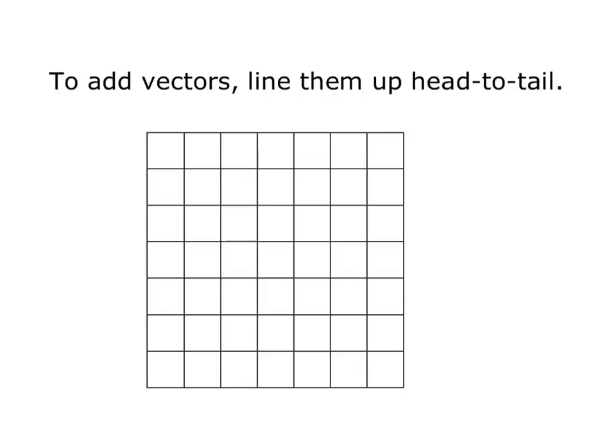To add vectors, you line them up head to tail. So let's say I have a vector u and another vector v, and I want to add them together. What I'm going to do is place vector v at the end of vector u. And the resulting vector, starting from the initial point of u going to the terminal point of v, is going to be vector u plus v.